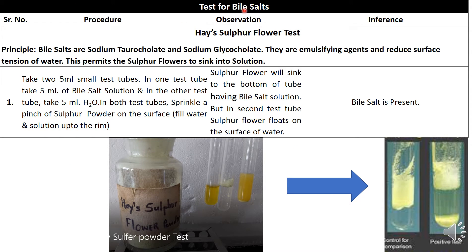The first test for bile salts is Hay's sulfur flower test. The principle is that bile salts — sodium taurocholate and glycocholate — are emulsifying agents that reduce the surface tension of water, causing sulfur powder to sink into the solution. Sulfur powder normally has a tendency to float on water, but in the presence of bile salts in the sample, this powder will sink.